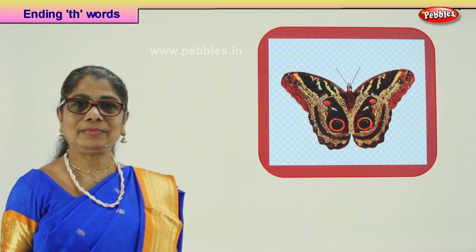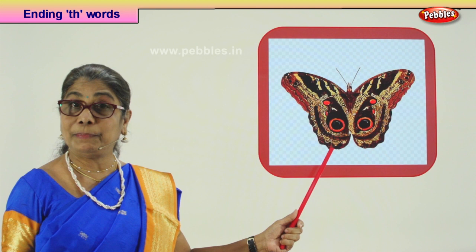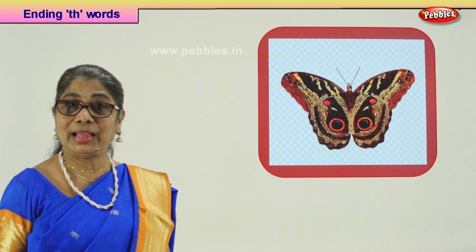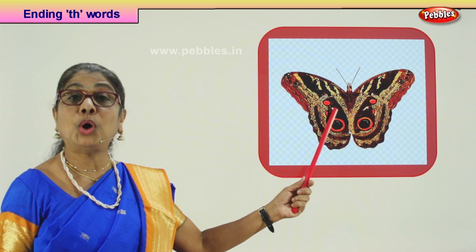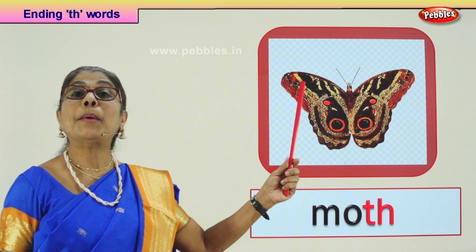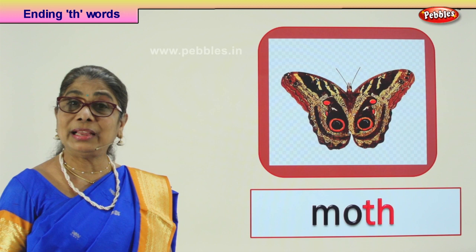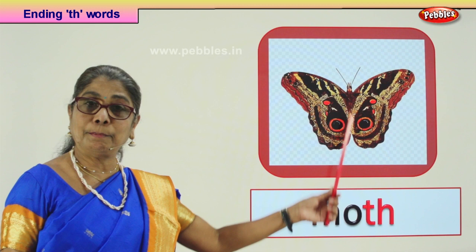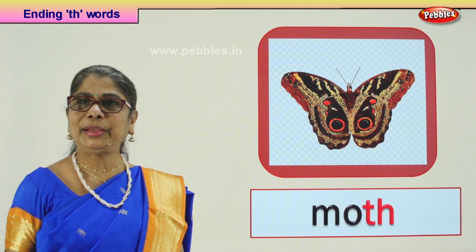Look what we have here. It belongs to the family of butterflies — it looks like a butterfly, but it is not a butterfly. Butterflies are colorful, but this is a moth. It's brown and looks like a butterfly. It is a moth. You find it on the tree, you find it in the house, sometimes in the night. What is this? Moth.